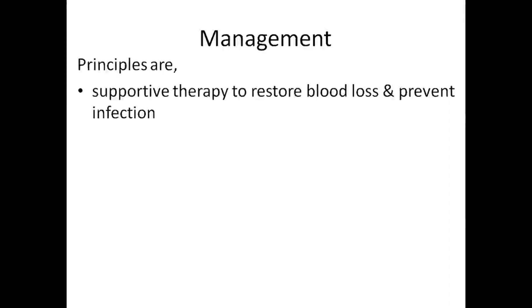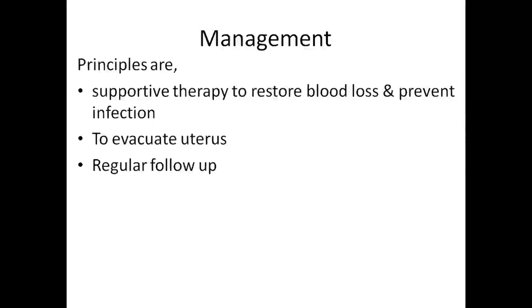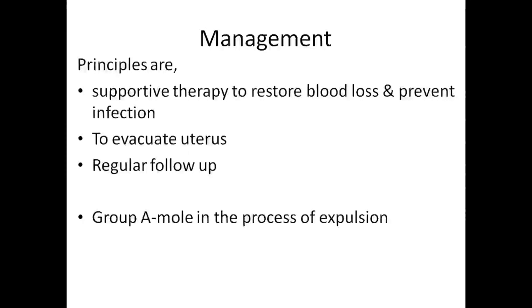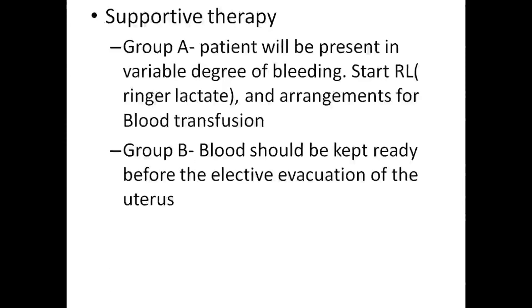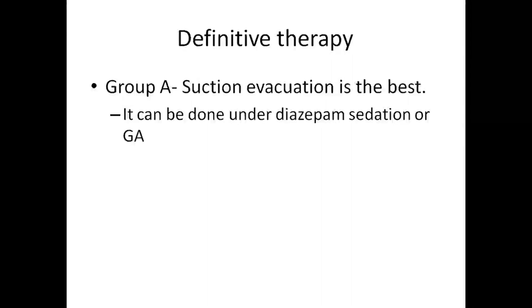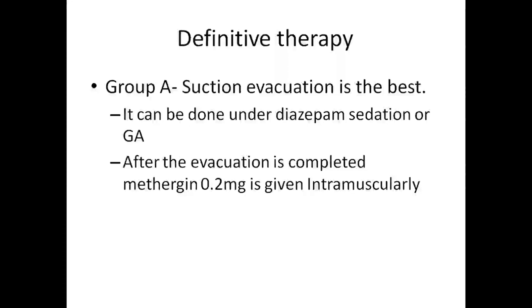Management: principles include supportive therapy to restore blood loss and prevent infection, and to evacuate the uterus followed by regular follow-up. Patients are divided into two groups: Group A — mole in the process of expulsion; Group B — uterus is inert or inactive. Supportive therapy for Group A: patient presents with variable degree of bleeding; start Ringer's lactate; arrange blood transfusion. Group B: blood should be kept ready before elective evacuation of the uterus. Definitive therapy for Group A: suction and evacuation is the best method, done under diazepam sedation or general anesthesia. After evacuation, methylergonovine 0.2 mg is given intramuscularly.